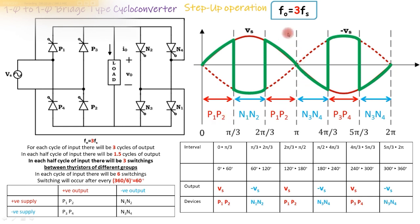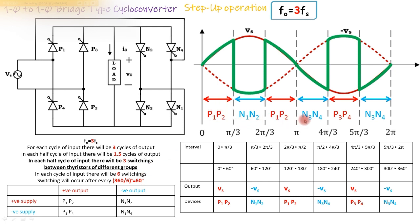To summarize for three times the output frequency: six switchings each at an interval of 60 degrees. For the positive half cycle thyristors numbered 1 and 2 are fired; for the negative half cycle thyristors numbered 3 and 4 are fired. For positive output P groups are fired; for negative output N groups are fired. The full firing sequence is: P1 P2, N1 N2, P1 P2, N3 N4, P3 P4, N3 N4.